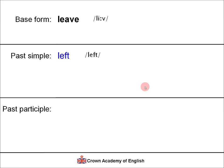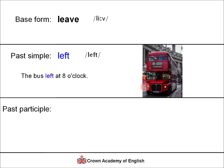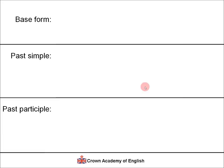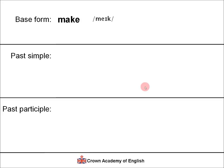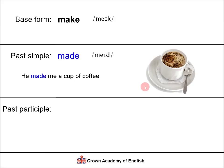The verb 'leave'. Past simple: 'left'. Example: 'The bus left at eight o'clock.' Past participle: 'left'. Example: 'Has the train left?' The verb 'lose'. Past simple: 'lost'. Example: 'I lost my phone yesterday.' Past participle: 'lost'. Example: 'Where are my keys? I think I have lost them.' The verb 'make'. Past simple: 'made'. Example: 'He made me a cup of coffee.' Past participle: 'made'. Example: 'I have made you a cake'.